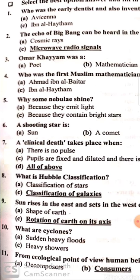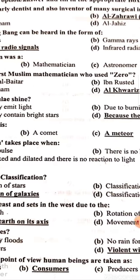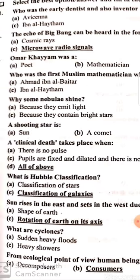What is Hubble classification? It is the classification of galaxies. The sun rises in the east and sets in the west due to the rotation of the Earth on its axis.